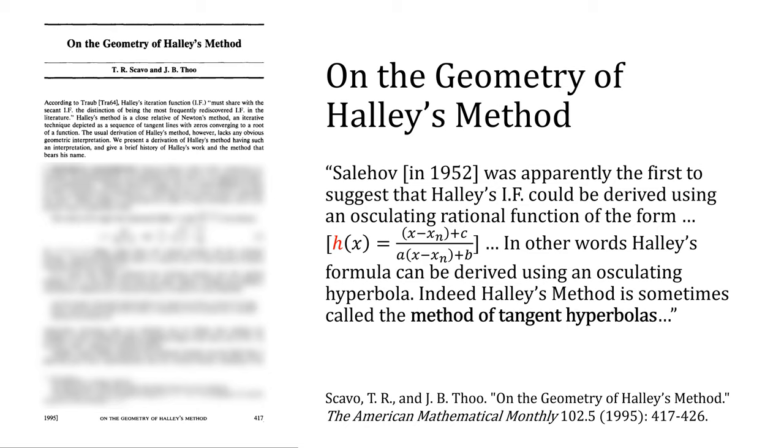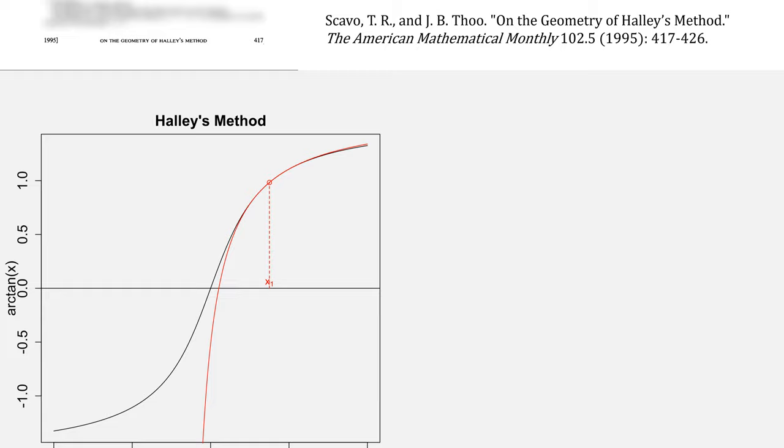Zelehov, in 1952, was apparently the first to suggest that Halley's iteration function could be derived using an oscillating rational function of the form, this equation. In other words, Halley's formula can be derived using an oscillating hyperbola. Indeed Halley's method is sometimes called the method of tangent hyperbolas.